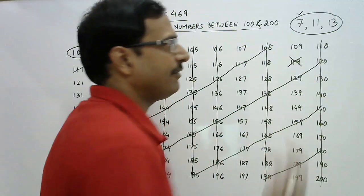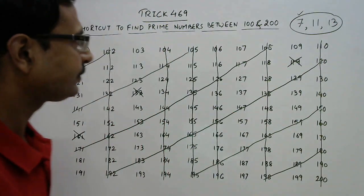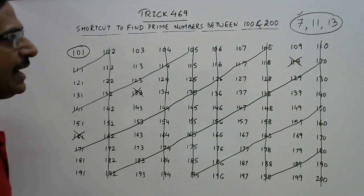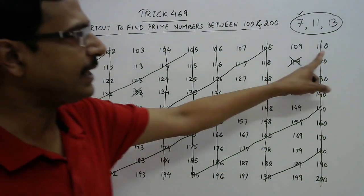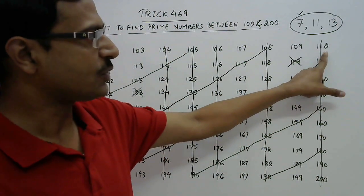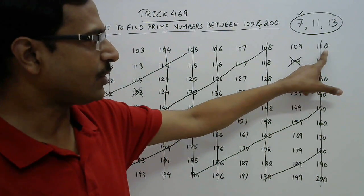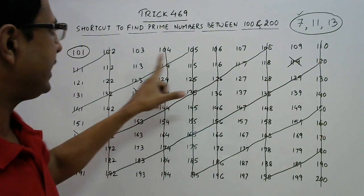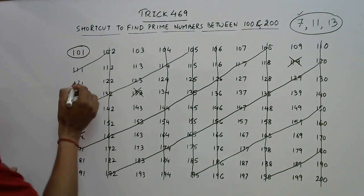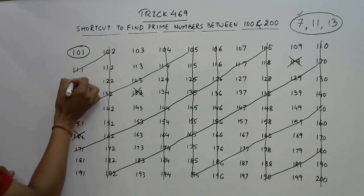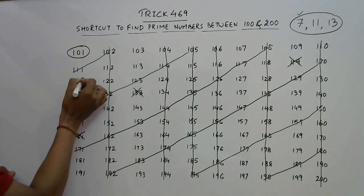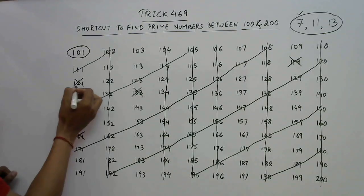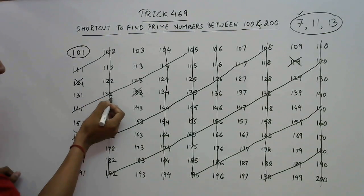Now come to 11. 11 tens are 110, which is already struck off. 11 times 11 is 121, so here it is: 121, then 132, then 143. This diagonal of multiples of 11 will be struck off now.